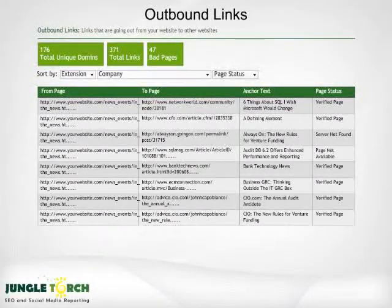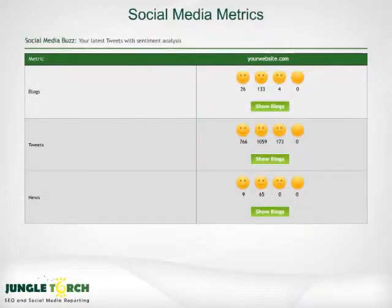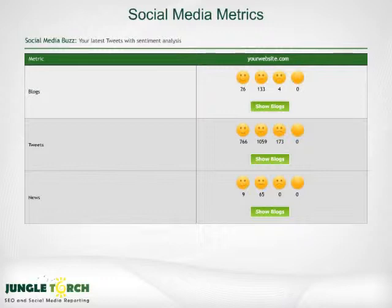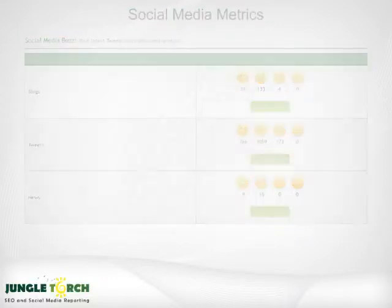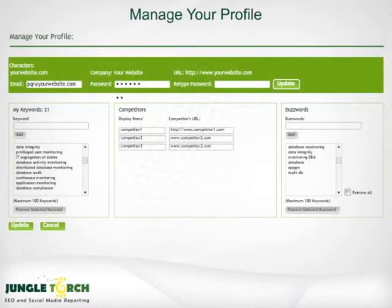Jungle Torch will also let you find specific links by name. Jungle Torch also outperforms the many cumbersome and complex social media tools for business. Based on buzzwords you select, Jungle Torch pulls in social media from Twitter, blogs, and news, and also layers on a sentiment analysis, which makes it easier to sort through the positive, negative, and neutral comments.